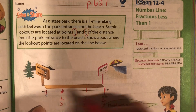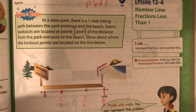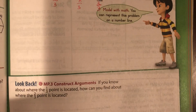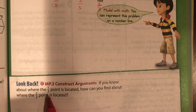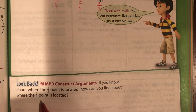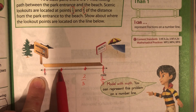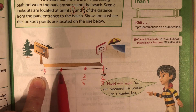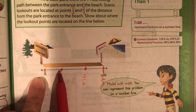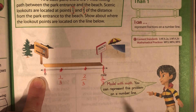So here is where our first scenic lookout is and our second scenic lookout. If you know about where the point 1 third is, how can you find out about where 2 thirds is? Well, it has to be the same distance. So if you know this is 1 third, then you would go about the same distance — about here — continuing to the right, getting closer to the 1 mile mark.